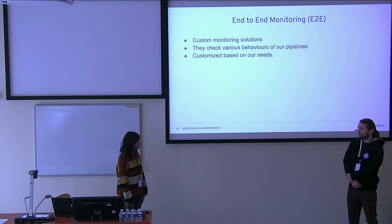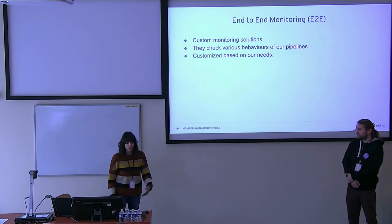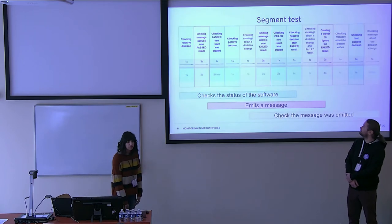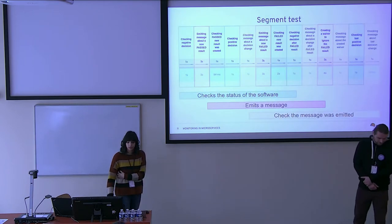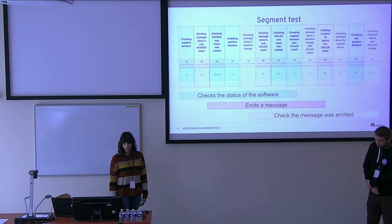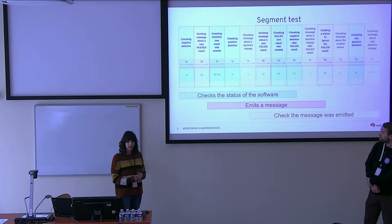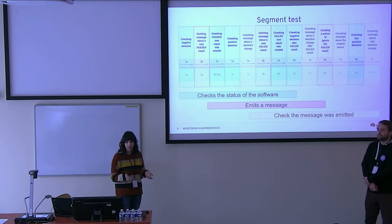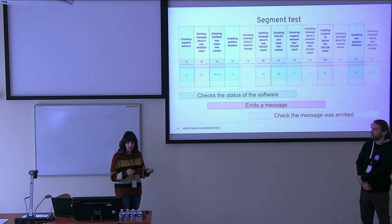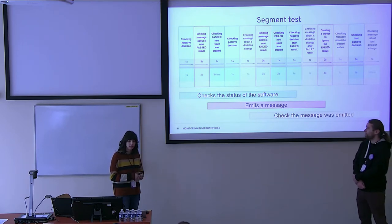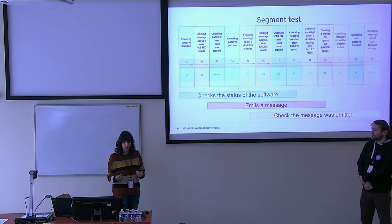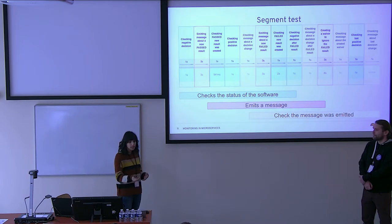We call them E2E checks. The first one is about the pipeline I showed earlier. It's a Jenkins job that tries to do many steps. The most important one is submitting messages with fake but realistic data — about some fake package. We try to send a message and see if after this message we get what we expect.